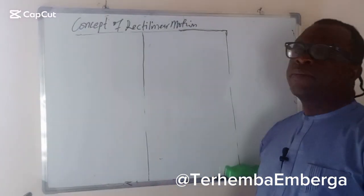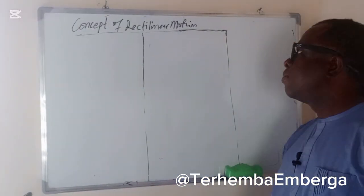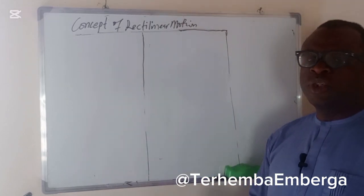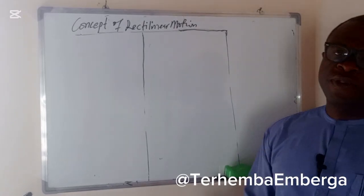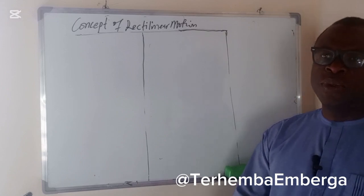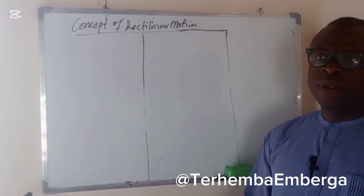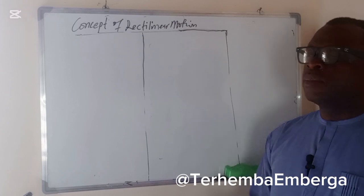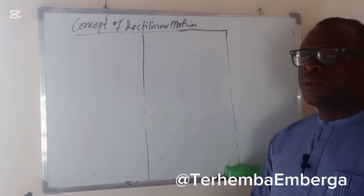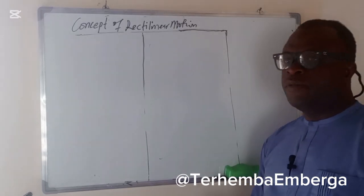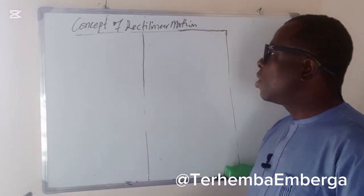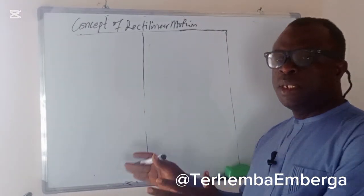Today we'll be looking at the concept of rectilinear motion, what we call translational motion — motion in a straight line. Many students of physics are always confused about how to use the equations of motion and when to use them. So this class will be looking at how these equations of motion can be derived. But before we go into that, we'll look at some of the important concepts concerning the equations of motion.